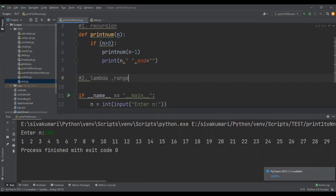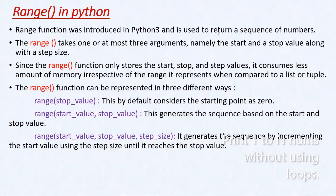Before we start writing the program I would like to share a few details about the range function. First of all, what is a range function? Range function is used to return a sequence of numbers. It was introduced in Python 3. Range function takes one or at most three parameters namely start, stop, and step size. Range function consumes very less memory compared to list and tuple because it doesn't store the range it is going to print — it just stores the start, stop, and step size values. Stop value is the mandatory parameter and start and step size are optional.